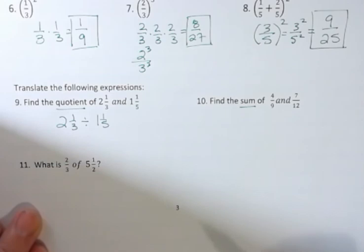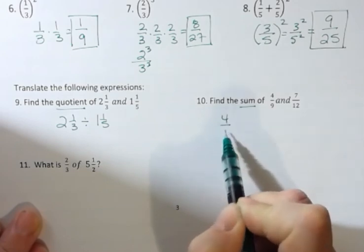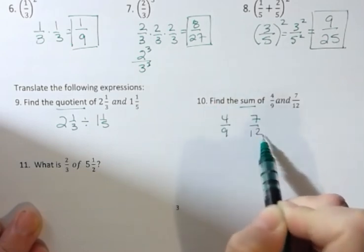What about this one? Find the sum of four-ninths and seven-twelfths. Again, we're just asking you to translate. That would be four-ninths and seven-twelfths. What's going to go in the middle there? Sum means add.